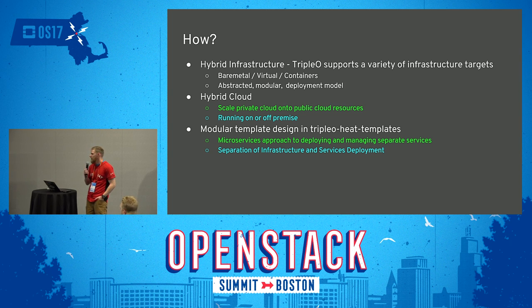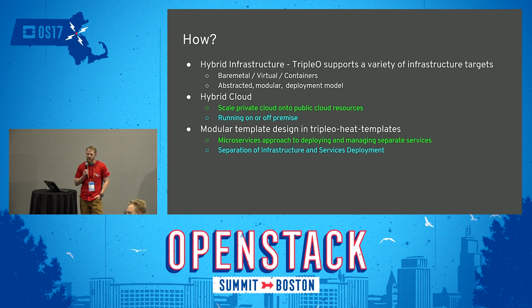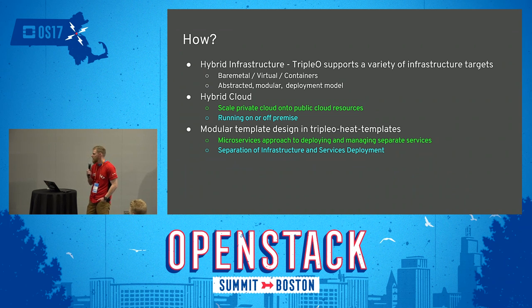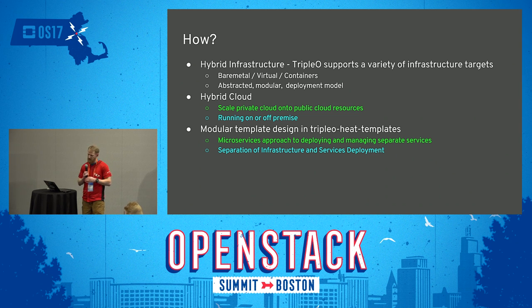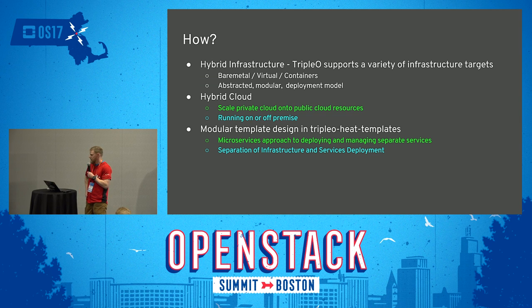We also have a hybrid cloud approach where you can use resources that are on or off-premise, depending on how you want to scale. If you have an existing cloud and you want to experiment with a new API service, you could actually run that on off-premise resources.